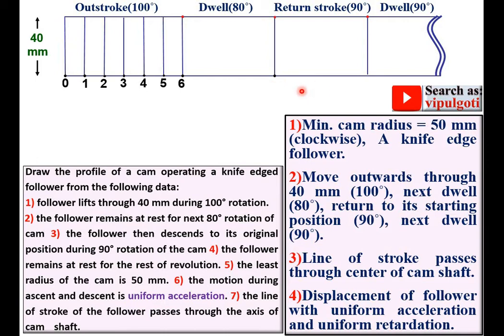Similarly, divide the return stroke into the 6 equal parts and give the name as 0 dash, 1 dash, 2 dash, 3 dash, up to 6 dash. And draw the vertical lines passing through all these points.